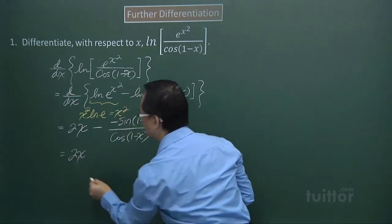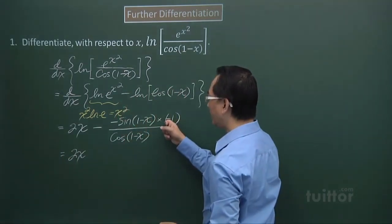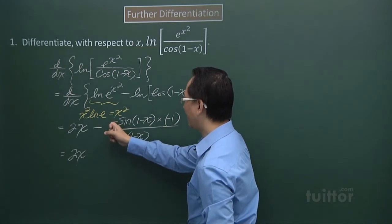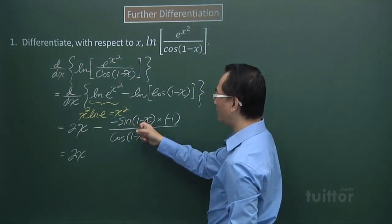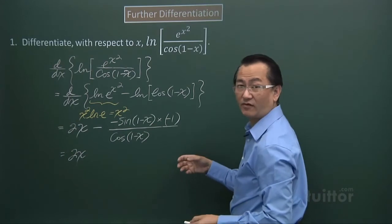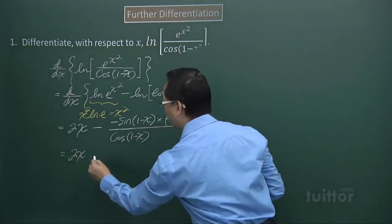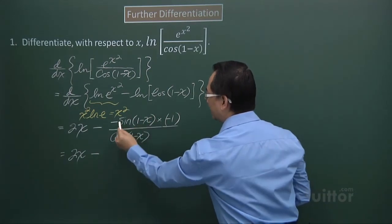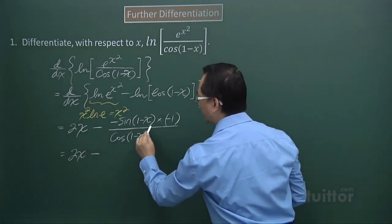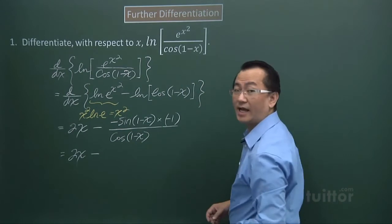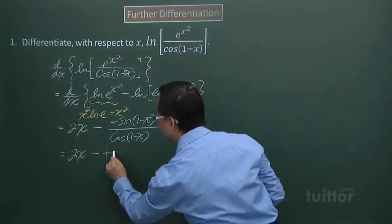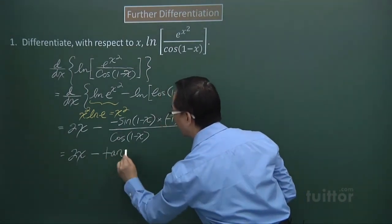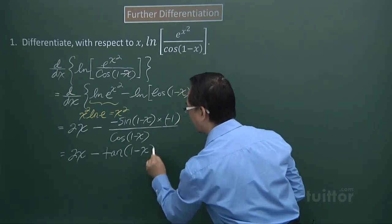The 2x, negative 1 times negative sine bracket 1 minus x, I'll get the positive of it. But there is a negative out there. So negative, I'm left with sine expression over cos expression. I get a tangent. So negative tangent bracket 1 minus x.